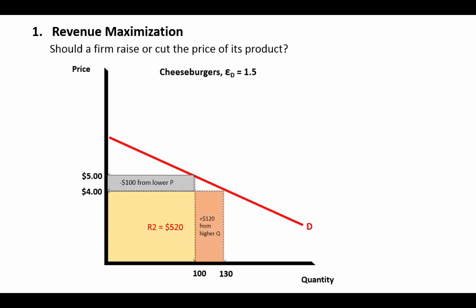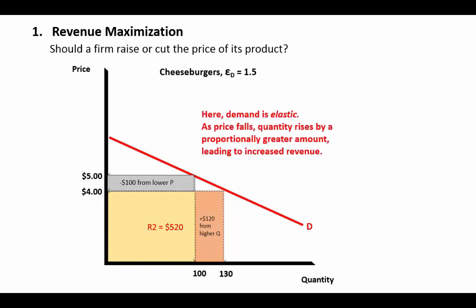With elastic demand, when price falls, quantity rises by a proportionately larger amount, leading to increased revenue. Now, does this give us any indication of whether this cafe should decrease the price of cheeseburgers? Not at all. In fact, the cafe is likely not going to decrease the price, because they only make another $20 by selling an extra 30 burgers. The cost per burger is probably more than $1, so costs are going to go up by more than $30 to gain only $20 in revenue.